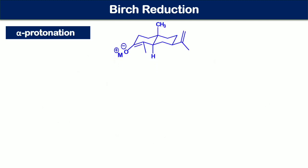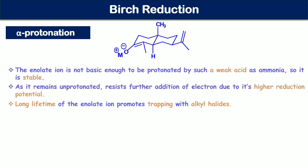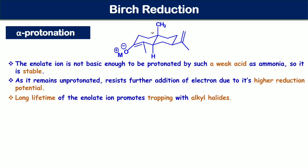Now the stereochemistry of the last step — protonation of the enolate ion — will be discussed. Some important points about the enolate ion: first, it is not basic enough to be protonated by a weak acid like ammonia, so it is stable. Second, as it remains unprotonated, it resists further addition of an electron due to its higher reduction potential, which is very high because of the high pi electron density. Third, the long lifetime of the enolate ion promotes trapping with alkyl halides, giving the opportunity to do further chemistry with it.